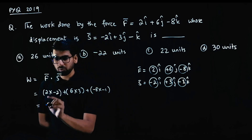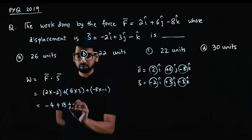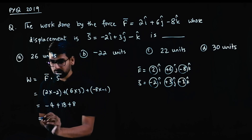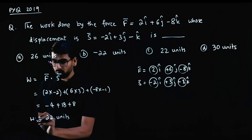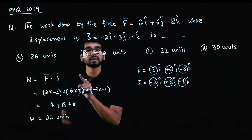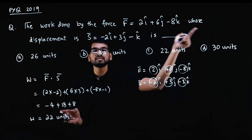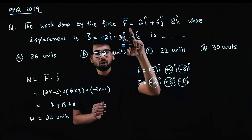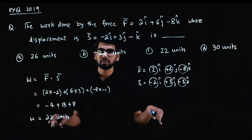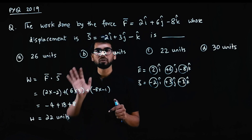Multiplying with signs: plus into minus = minus, so 2 × -2 = -4. Plus 6 × 3 = 18. Minus into minus = plus, so -8 × -1 = +8. Total: -4 + 18 + 8 = 22 units. Work done is a number. Dot product is also called scalar product — a scalar is a number, as opposed to a vector. Option C is the correct answer. Work done can be negative, but in this case it is 22 units.